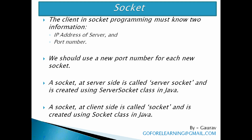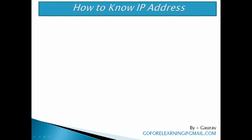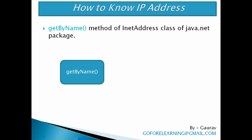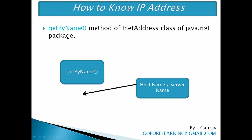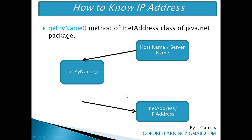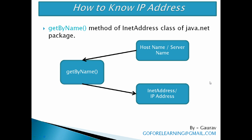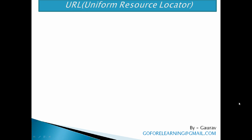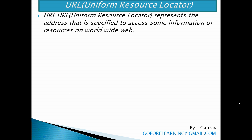A socket at the client side is called a Socket and is created using the Socket class in Java. It is possible to know the IP address of a website on the internet with the help of the getByName() method of the InetAddress class of the java.net package. The getByName() method takes a host name or server name and returns an InetAddress object, which is the IP address of that server. Next is URL — Uniform Resource Locator — which represents the address specified to access information or resources on the World Wide Web.